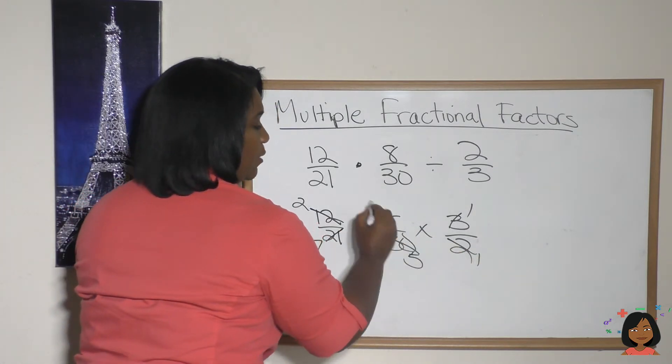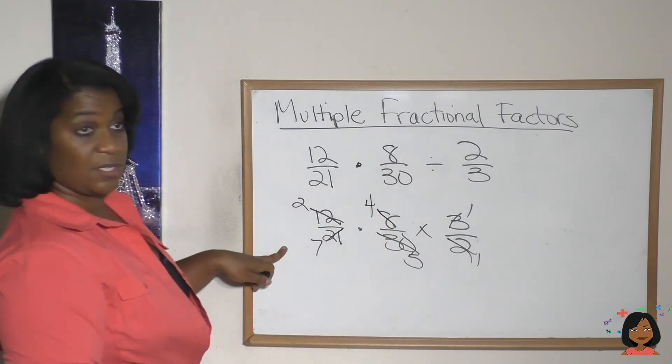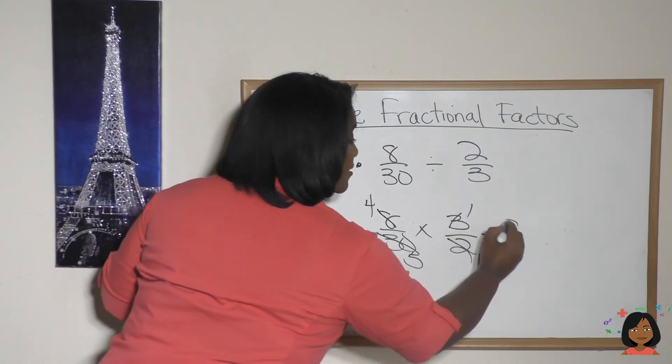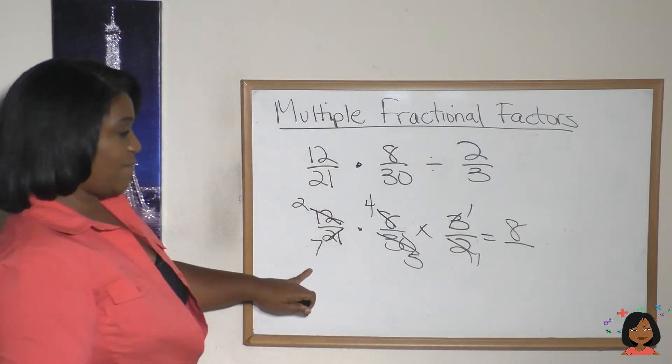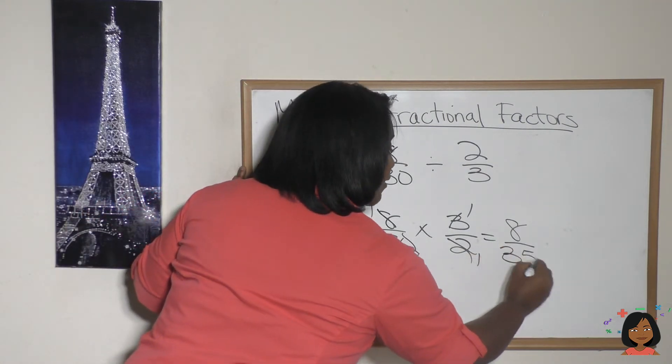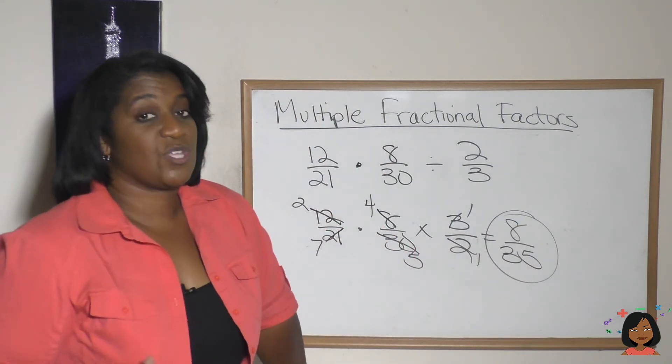Is there anything else? I don't think so. So let's do it: two times four is eight, and we've got a seven times a five, which is 35. Eight over 35—that's your answer.